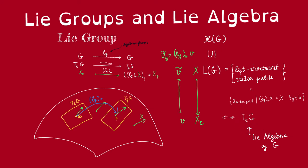It is easy to check that the Lie bracket preserves left invariance, so the set of left invariant vector fields actually forms a Lie algebra. Under this bijection we can put a Lie algebra structure on the tangent space to G at the identity, and we call this the Lie algebra of the Lie group G.